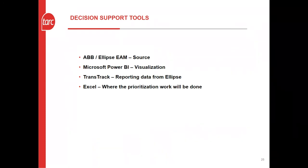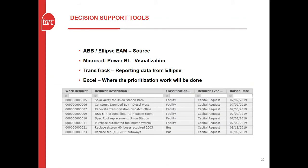Our asset record resides in our enterprise asset management system called Ellipse. Ellipse offers powerful data management tools, but sometimes we need to use data more readily and flexibly — for that we're going to be using both TransTrack and Power BI within the year. Even with Ellipse and the new reporting tools, Excel will play a big part in our prioritization process because of its flexibility. The first step for every project is entry into a capital request screen in Ellipse, which will remain true indefinitely because it acts as a constant record. Following that step, we move directly into Excel — first with the risk assessment group, and then a separate project prioritization group. So two separate groups of people within TARC.